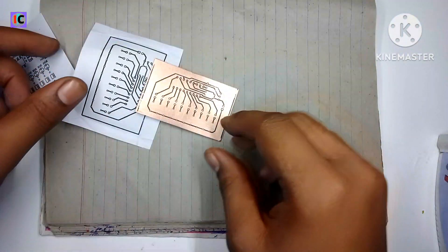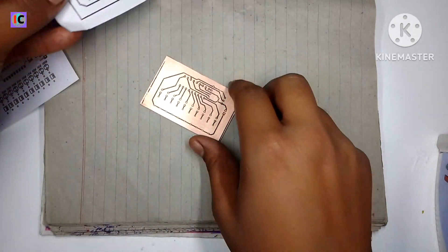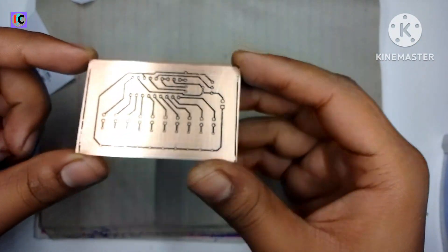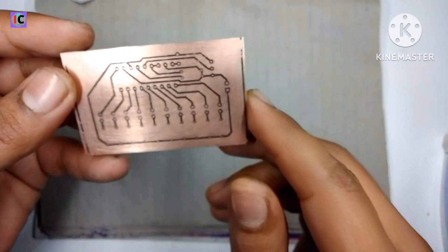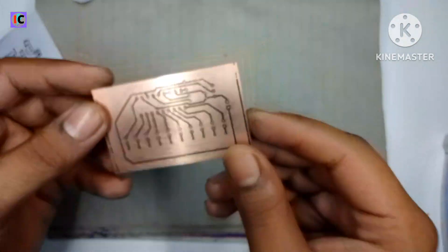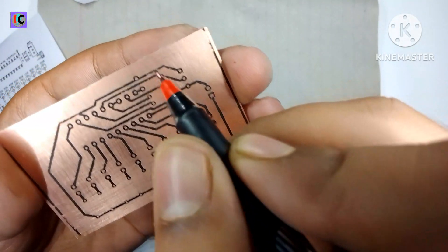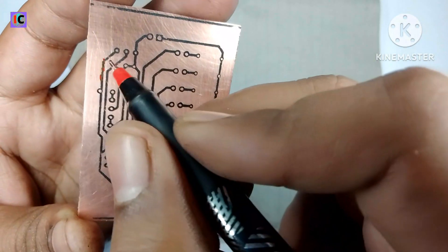Now the printing of the bottom layer PCB traces on the copper board is successful, but you can see some traces are not printed well and have some breaks. For the perfection of this, we are using a permanent marker to fix them.